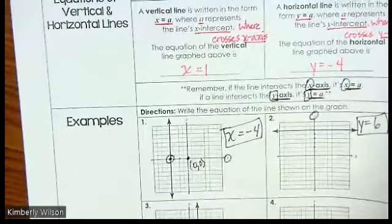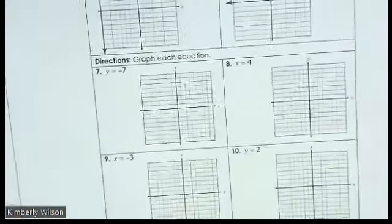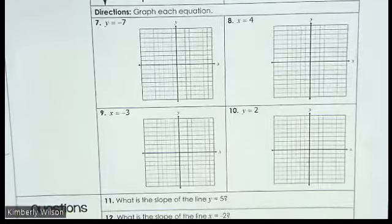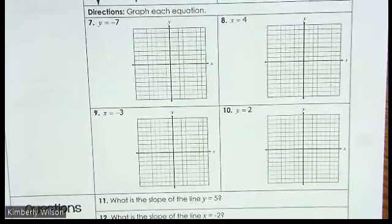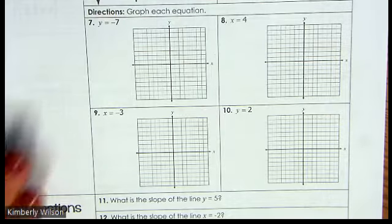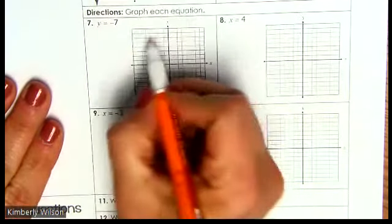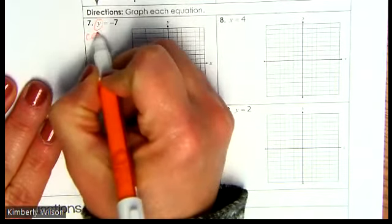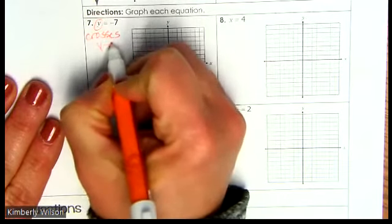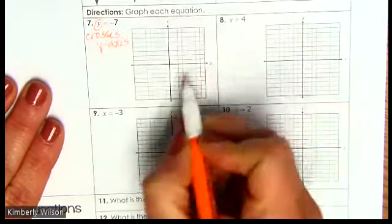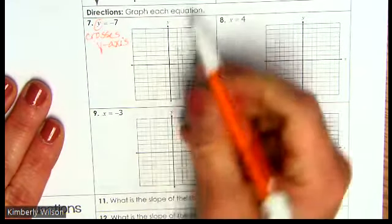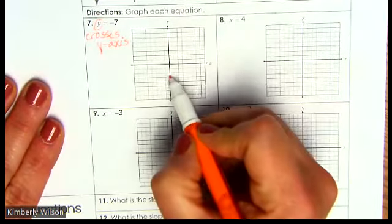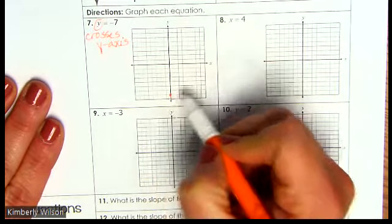A few more examples. Now we're shifting — we're no longer given the graph, we're given the equation and we now have to graph it. If it's y equals, that means it's going to be crossing the y-axis. So y equals negative 7 means it crosses the y-axis at negative 7. So I'm going to be going across here — 2, 4, 6, 7 — so it's going to be crossing here.